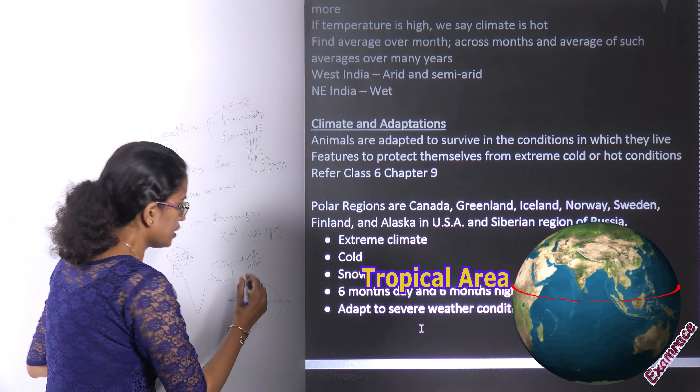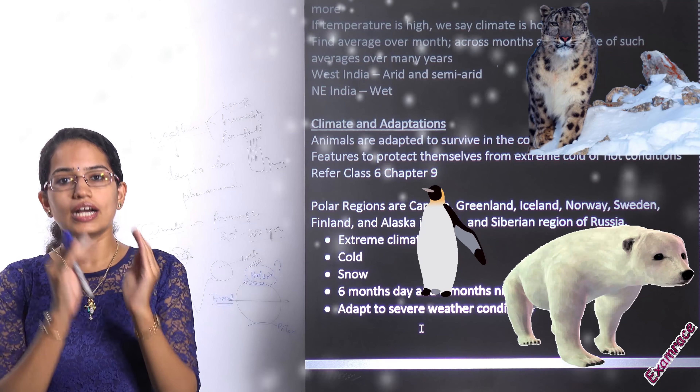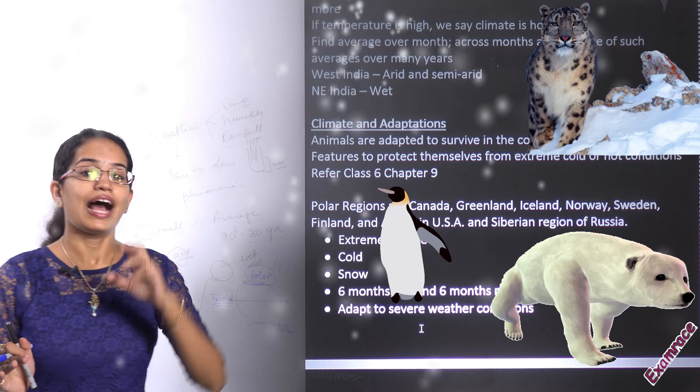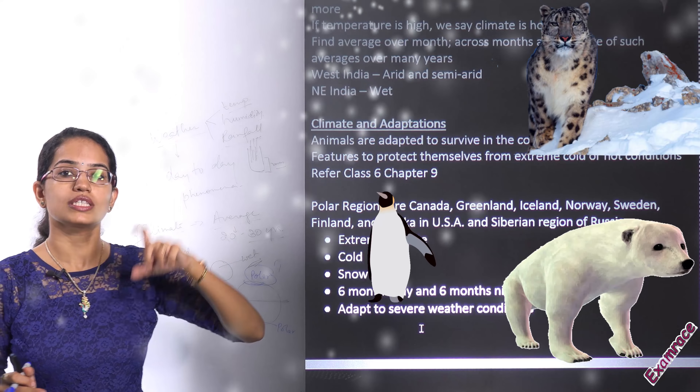Weather conditions are monitored by the meteorological department, which is governed by various bodies of the government. In India, it's the Indian Meteorological Department — the IMD — which forecasts day-to-day happenings. When we consider weather, we consider three elements: the first element is temperature, the second is humidity, and the third is rainfall. These three are the basic elements which govern the weather conditions.